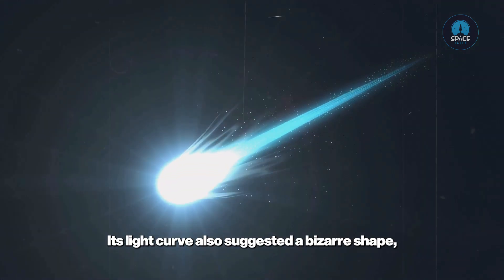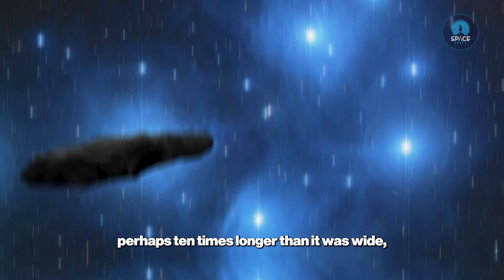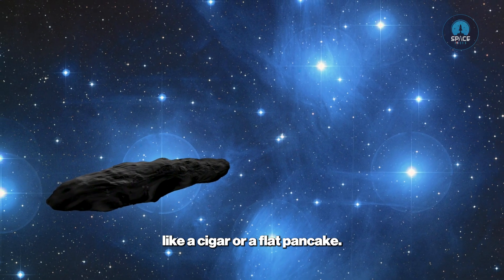Its light curve also suggested a bizarre shape, perhaps ten times longer than it was wide, like a cigar, or a flat pancake.